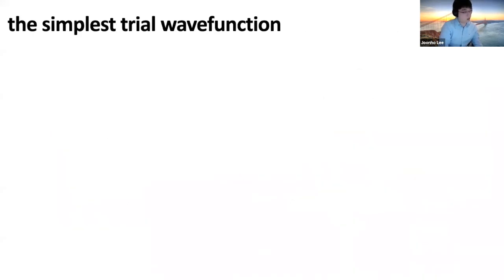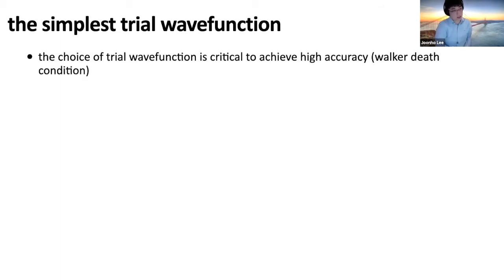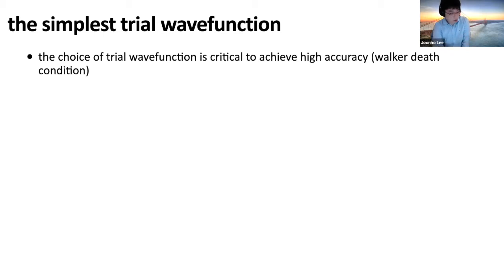The trial wave function is critical for achieving high accuracy in AFQMC. It sets the walker death condition and is the source of bias introduced by the constraint. If we improve the trial wave function, the walker death condition improves and we converge toward the exact answer. Therefore we must choose trial wave functions very wisely, balancing accuracy with computational feasibility — making trials too complicated would result in much steeper scaling and potentially exponential cost again.